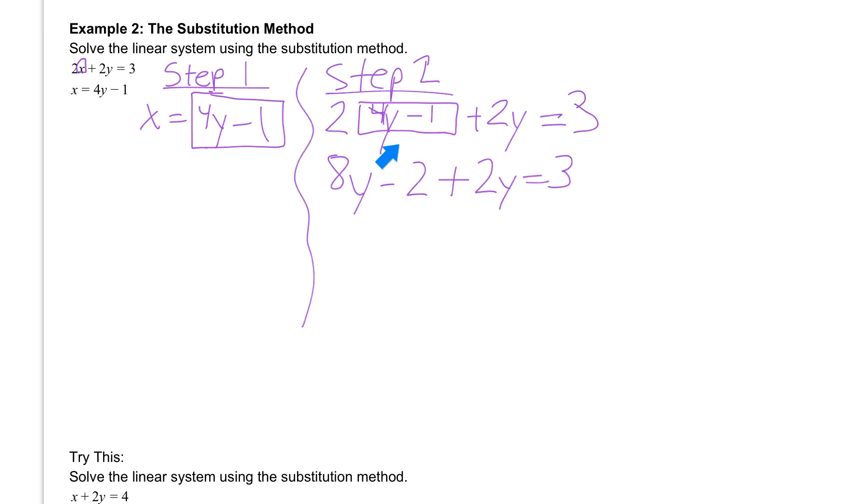Then we can combine like terms. 8y plus 2y will give us 10y minus 2 equal to 3. Then we want to add the 2 over to the other side. And we get 10y equal to 5. And finally we are dividing both sides by 10. If we divide by 10, 5 divided by 10 is 1 half.